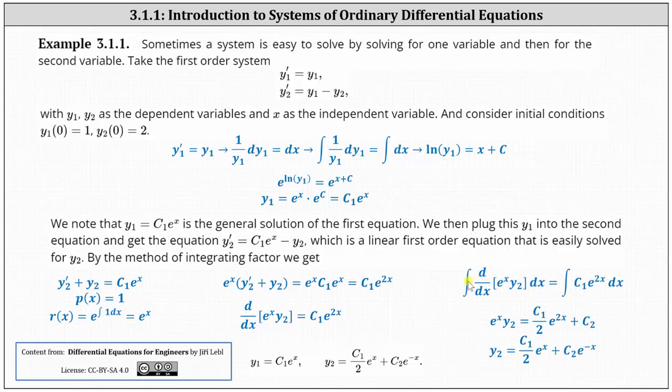Simplifying on the left, the integral undoes the derivative, and we're left with e to the x y2. On the right, we perform u substitution, where u is equal to 2x, giving us c1 divided by 2 e to the 2x, plus the constant c2. The last step is to multiply both sides by e to the negative x to solve for y2, which gives us y2 equals c1 divided by 2 e to the x plus c2 e to the negative x. This is the general solution for the second equation.